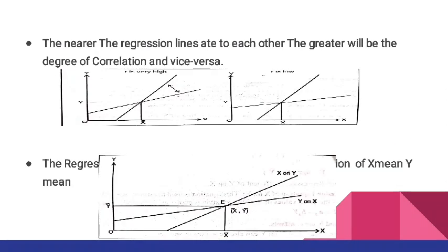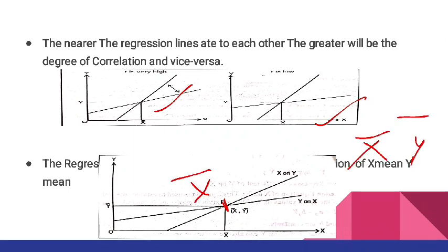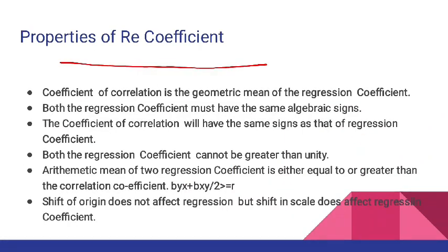The nearer the regression lines to each other, the greater will be the degree of correlation and vice versa. Jitni paas hongi utna zyada correlation hoga, jitni door hongi utna kam correlation hoga. Aur jahan regression lines ek doosre ko intersect karte hain — woh point hota hai x mean aur y mean ka. Yahan se hum average of x as well as average of y calculate kar sakte hain.